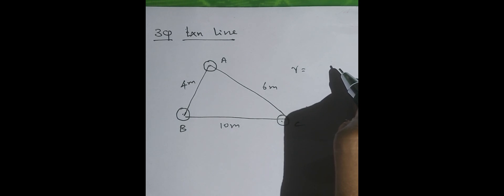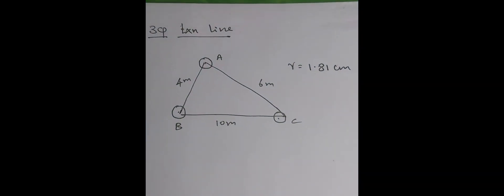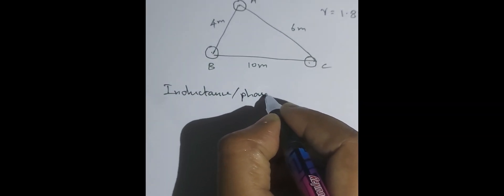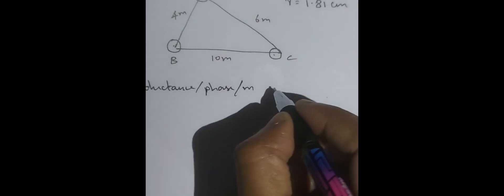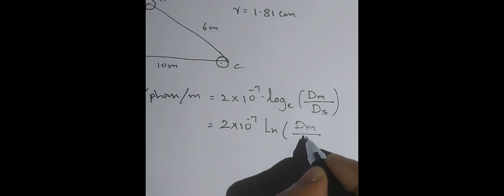If diameter is given instead, you have to find out the radius. Radius is 1.81 centimeter as per the problem. Now we know inductance per phase per meter is: 2 × 10⁻⁷ × ln(dm / ds), where dm is the mutual GMD and ds is the self GMD, which is nothing but the geometrical mean radius.